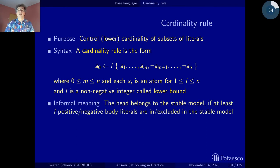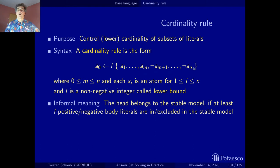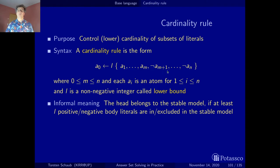The informal meaning is that the head of this cardinality rule belongs to the stable model if you count how many elements in the body are true in the stable model and find l or more of them — then the body is true, the rule fires, and gives you the head. With positive body literals, it's about being included in the stable model; with negative ones, it's about being false or not being in the stable model.